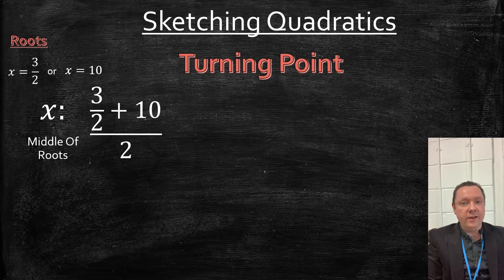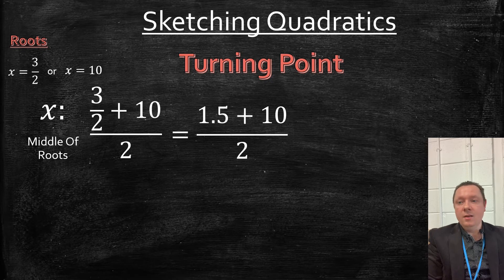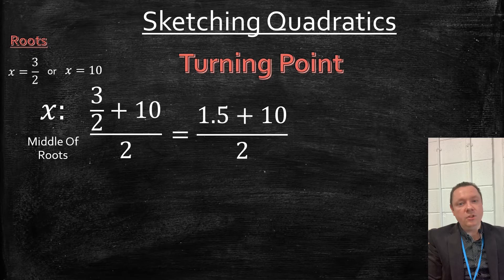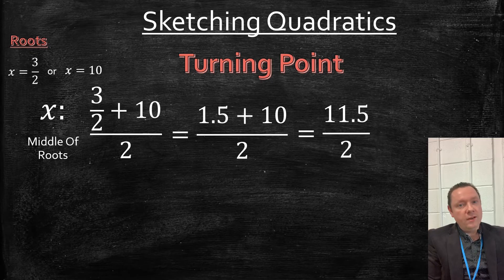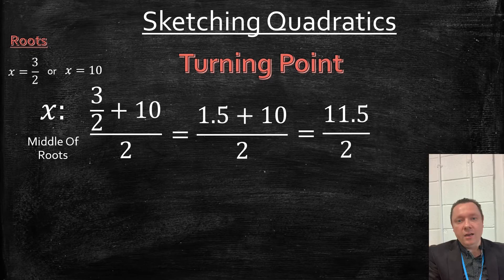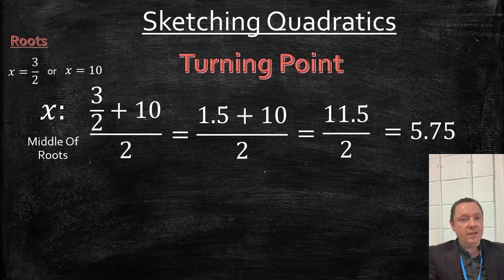So (3/2 + 10) divided by 2 is what I'm going to do. That's 1.5 plus 10 over 2. That's 11.5 over 2. Get a calculator if you're unsure, and you'll see that it's 5.75.